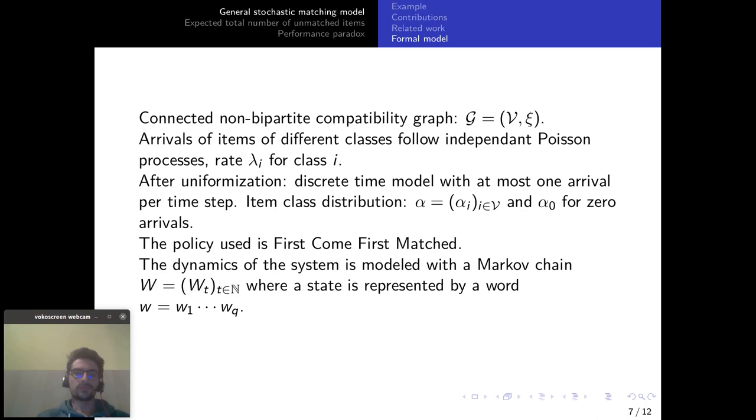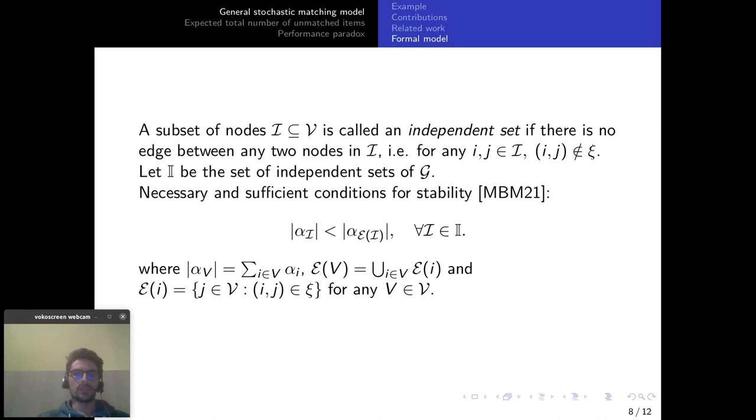Another important notion is the independent set I which is a subset of nodes such that there is no edge between any two nodes and for the remainder of the talk we're going to assume the necessary and sufficient conditions for stability which is that for all independent sets the sum of the arrival rates at the nodes of this independent set are strictly lower than the sum of the arrival rates at all the neighbors of the independent set.